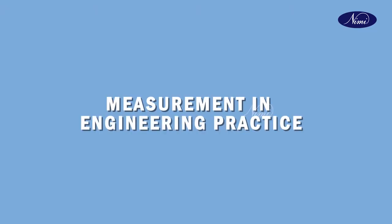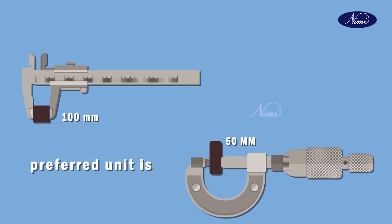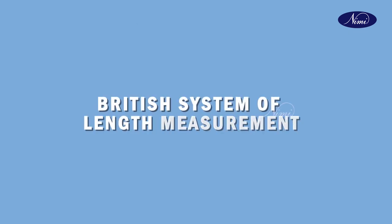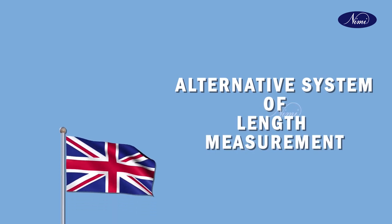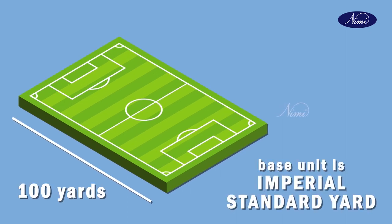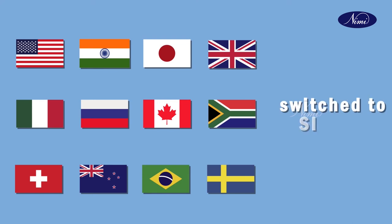Measurement in engineering practice: usually in engineering practice, the preferred unit of length measurement is millimeter. Even both large and small dimensions are stated in millimeters. An alternative system of length measurement is the British system. In this system, the base unit is the imperial standard yard. Most countries, including Great Britain itself, have however in the last few years switched over to SI units.